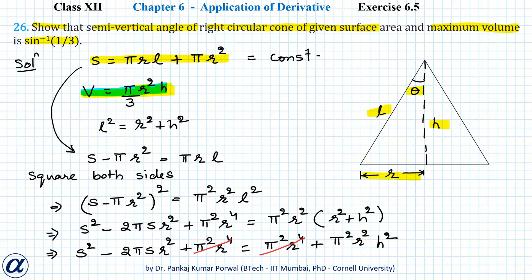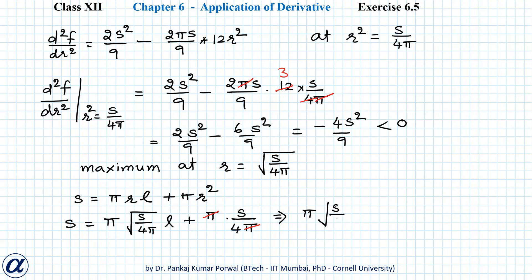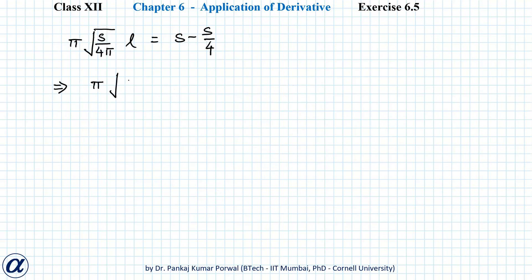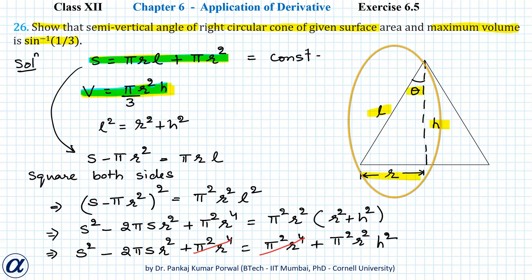Now we find the value of l using the surface area equation. Substituting r = √(S/4π): S = π·√(S/4π)·l + π·S/(4π). Simplifying: π·√(S/4π)·l = S − S/4 = 3S/4. Solving: l = (3S/4) / (π·√(S/4π)) = 3√(S/4π).